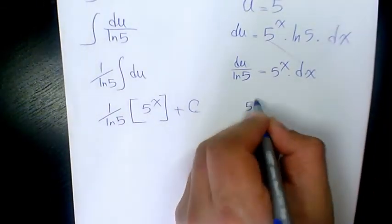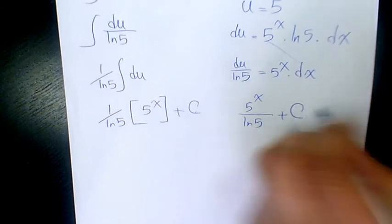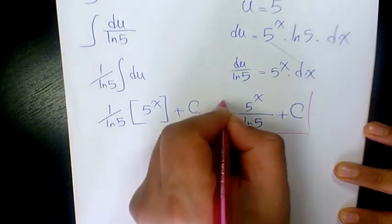So it's going to be 5 to the power of x divided by ln 5 plus a constant number. This is the final answer.